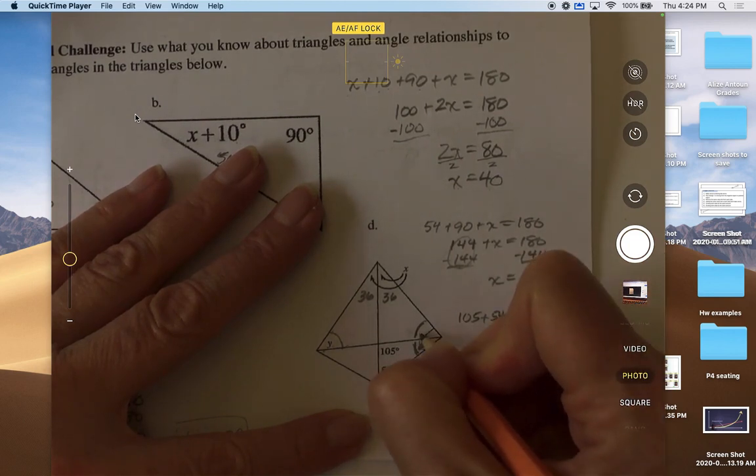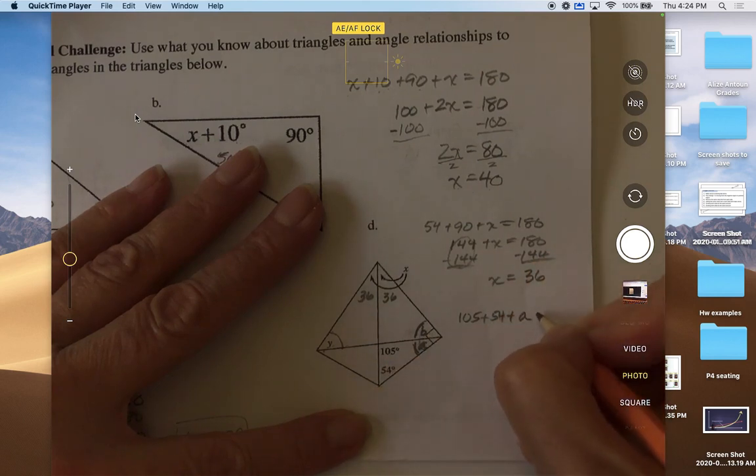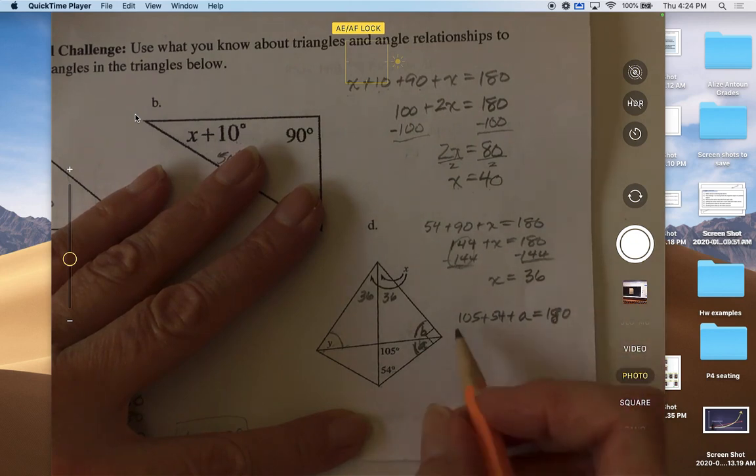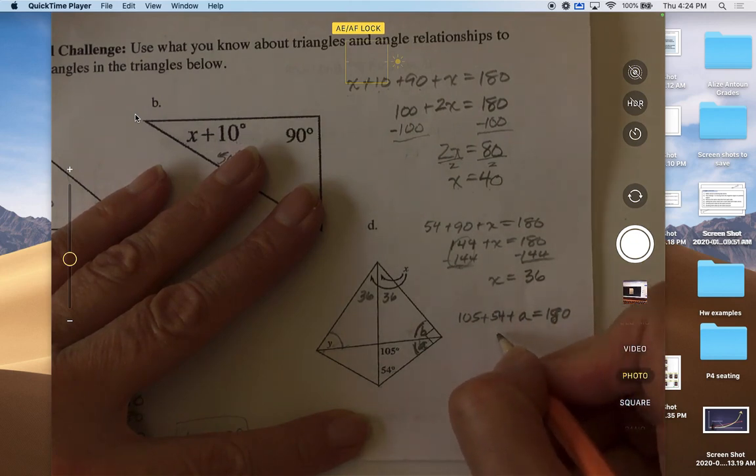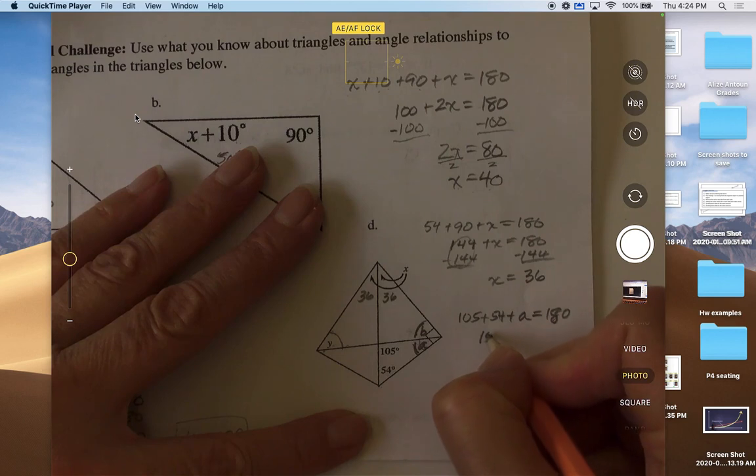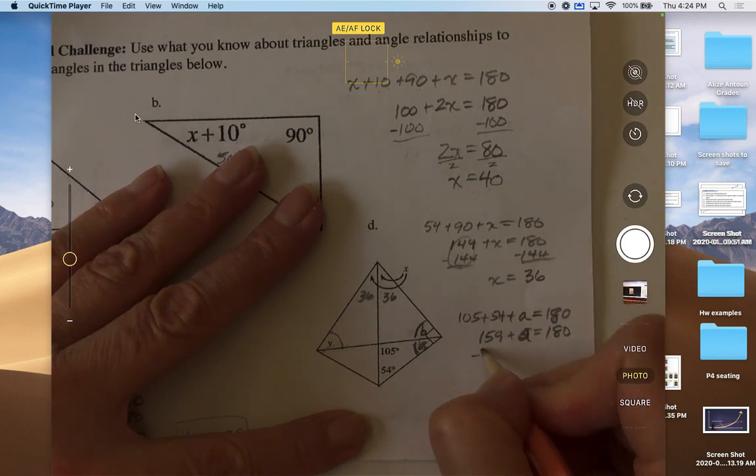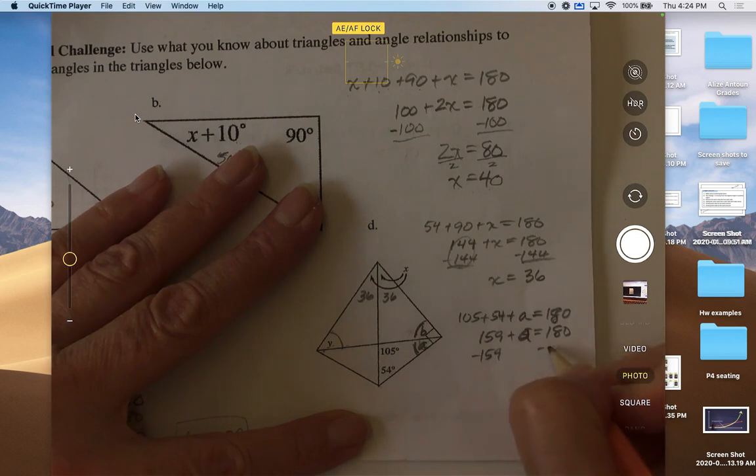We'll call this one a, we'll call this one b, equals 180. So 105 plus 54 is 159, plus a equals 180.